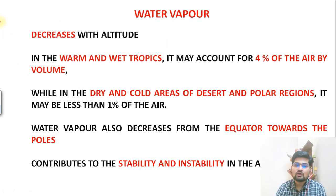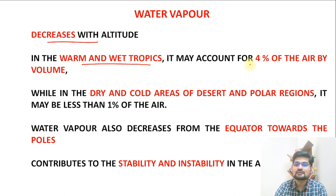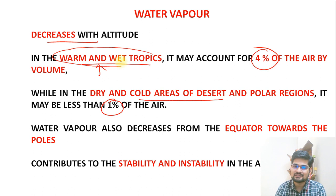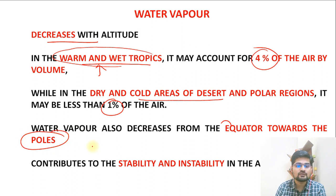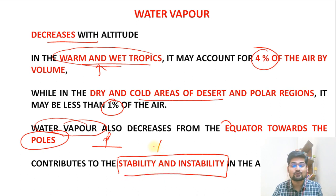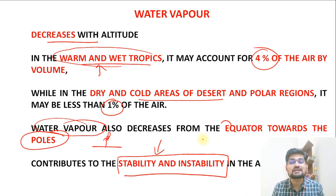Water vapor decreases with altitude. In warm and wet tropics it constitutes about 4% of the air, while in dry and cold areas it is just 1%. Water vapor content decreases from the equator towards the poles. It is also the major factor that leads to atmospheric stability and instability — water vapor plays a major role in that, which will be discussed in lectures to come.